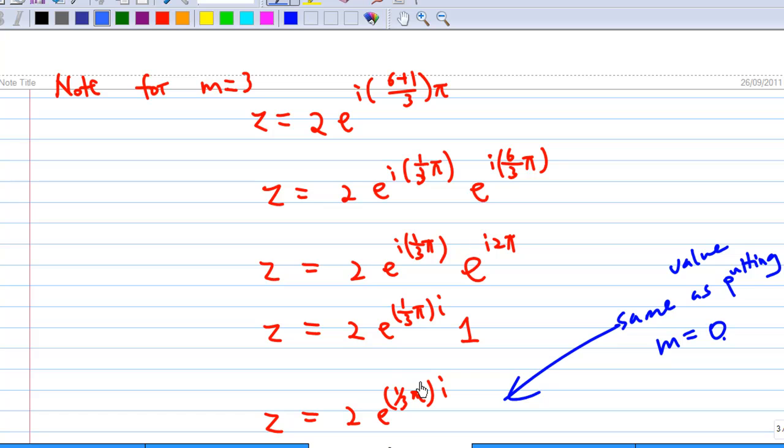That is why the values of z repeat. It is not necessary to put m equal to 3, 4, 5, 6 and so on. You just need to put m equal to 0, 1 and 2.